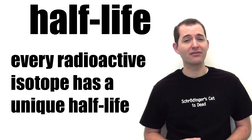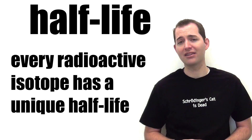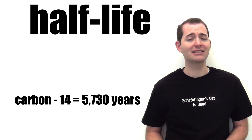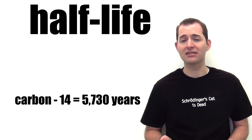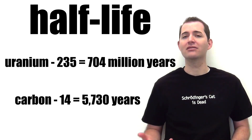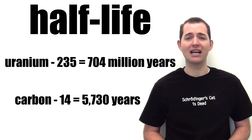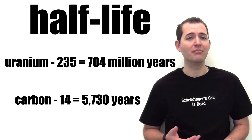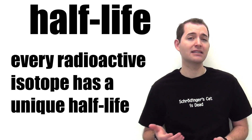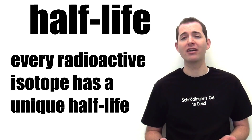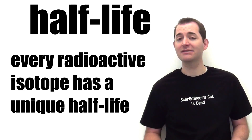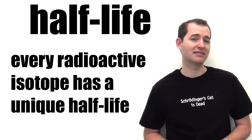Every radioactive isotope has a specific half-life. For example, carbon-14 has a half-life of about 5,730 years, while uranium-235 has a half-life of about 704 million years. From these examples, we can see that the length of time of a half-life between elements can vary greatly, and it is dependent upon the specific isotope.